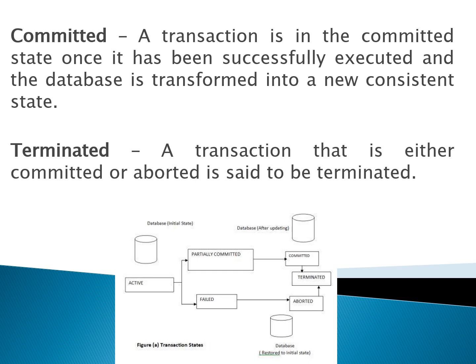Terminated state: a terminated state will occur in either case — either it might be committed, or it might be aborted. After either of these, the transaction comes to the terminated state, meaning the end of the transaction. It could be successful — meaning committed — or unsuccessful due to a failure, which might be a software failure, hardware failure, network crash, or any other kind of failure.